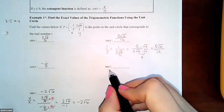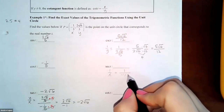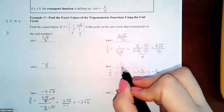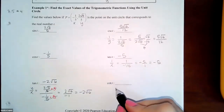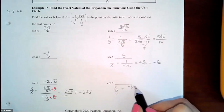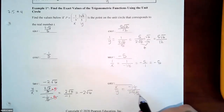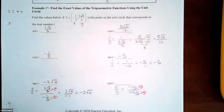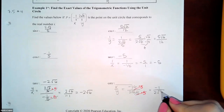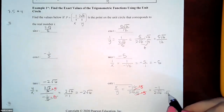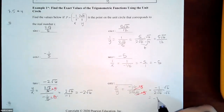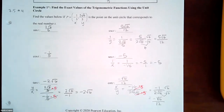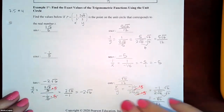Secant is 1/x: 1/(−1/5) = −5. Cotangent is x/y: (−1/5) ÷ (2√6/5). Multiplying by the common denominator 5, this gives −1/(2√6). Rationalizing: multiply by √6/√6 to get −√6/12. So all six trigonometric function values have been found.